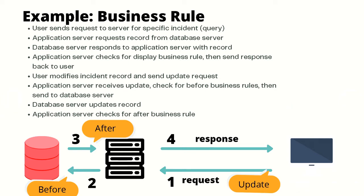Let's take an example where a user sends a request to a server for a specific incident. The user sends a request to the server for a specific data update, the database server responds to the application server with the record, and then the application server checks for the display business rule. The display business rule runs on the load of the form and sends the response back to the user — you can consider it as operating at the form level.